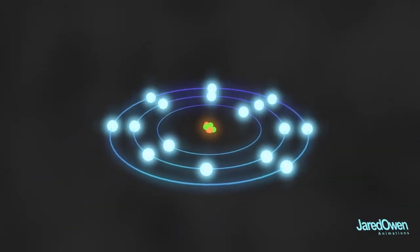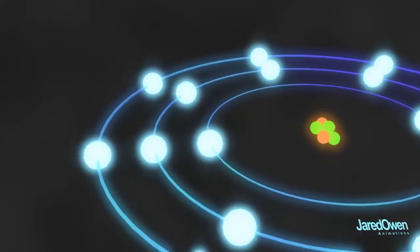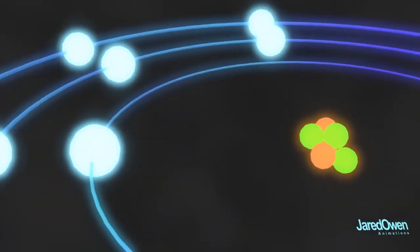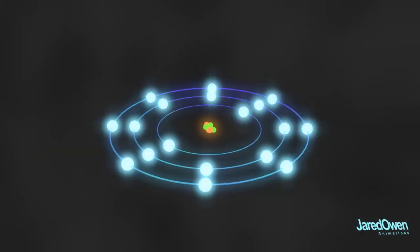It didn't take long before we realized that these shells don't determine how close the electron is to the nucleus. As it turns out, electrons are a lot more unpredictable. So if electrons don't orbit the nucleus, what do they do?